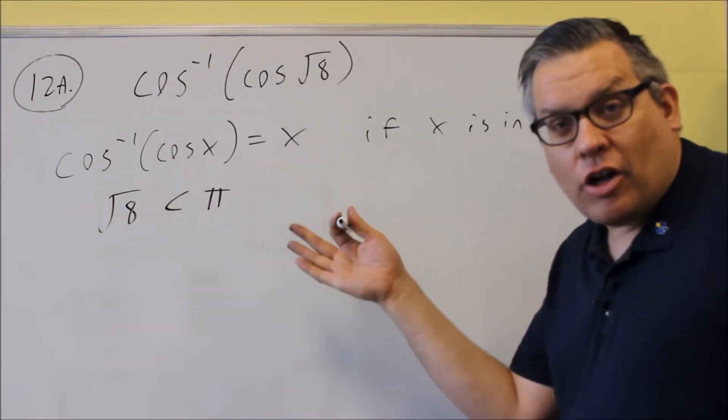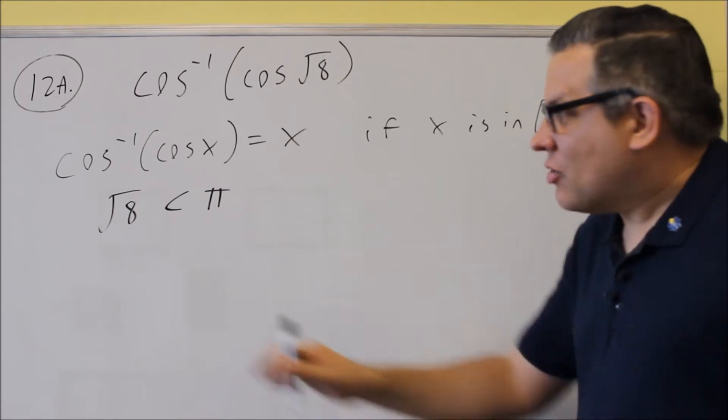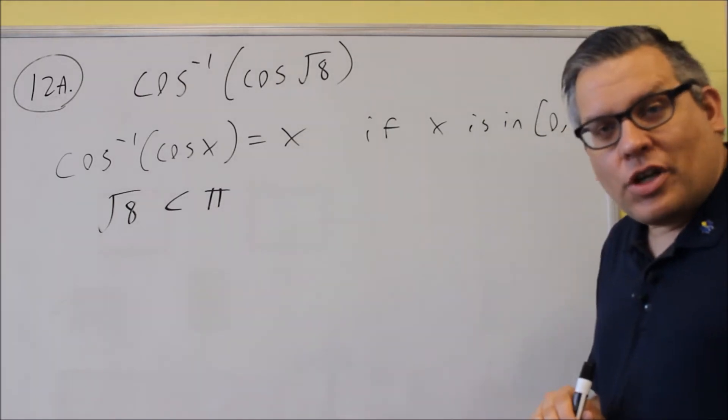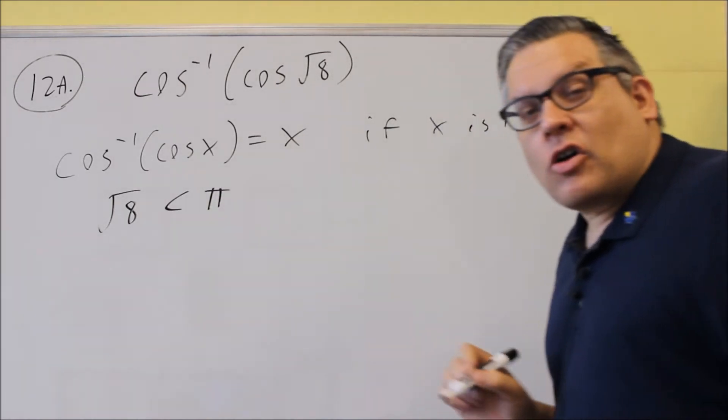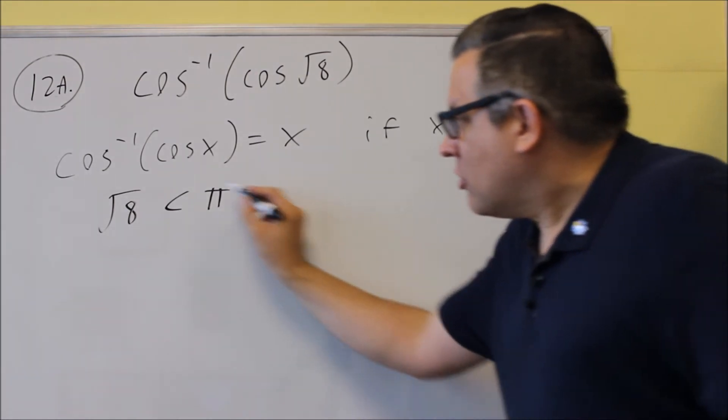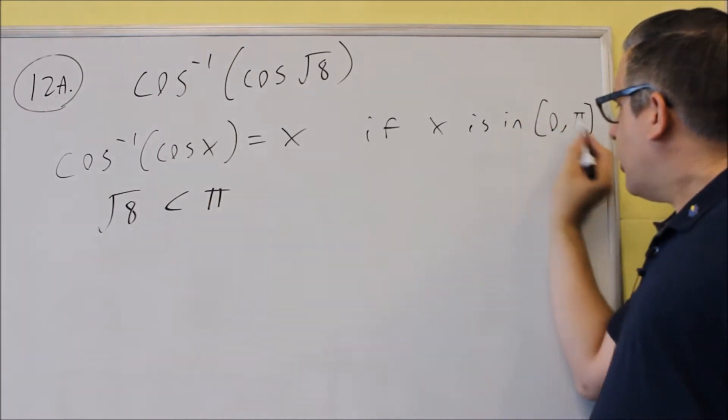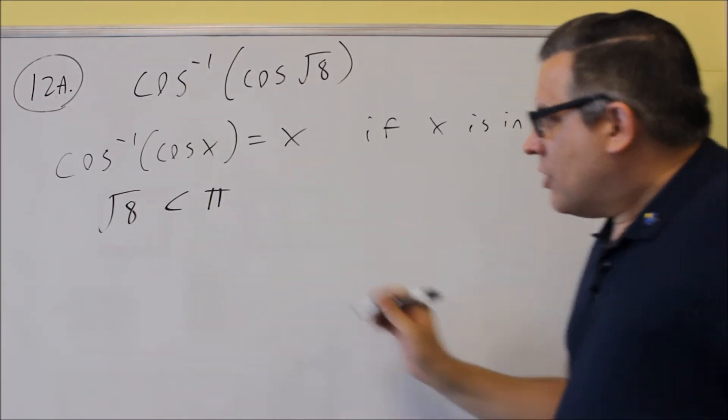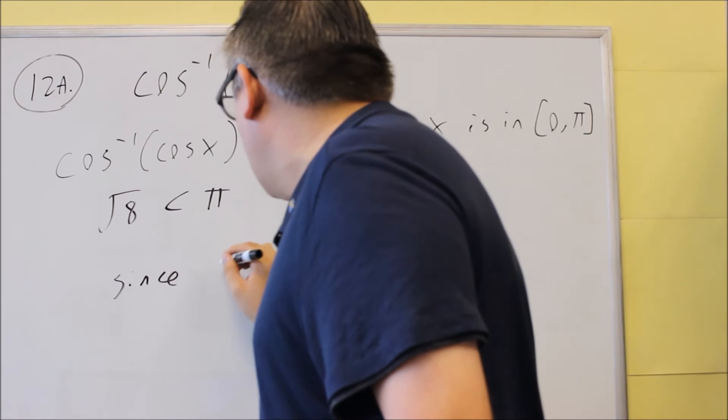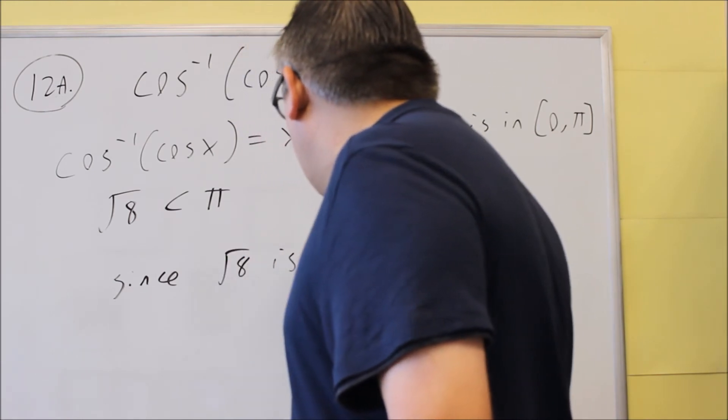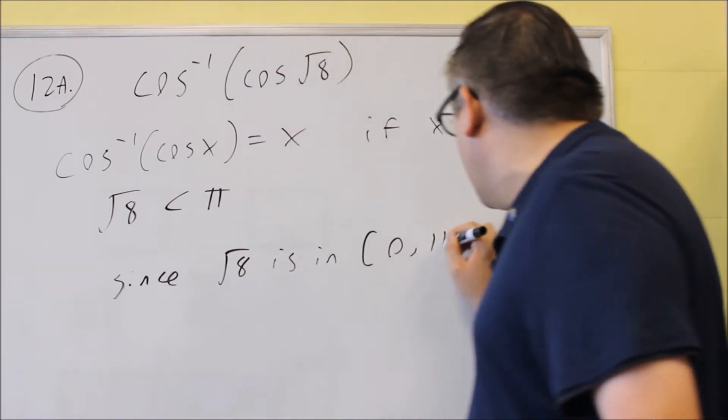Square root of 9 is exactly 3, so square root of 8 will be a little bit less than 3. I know the numerical value of π is 3.14, so I already know that square root of 8 is less than π. So it will definitely be in this interval. Since square root of 8 is in the interval from 0 to π,